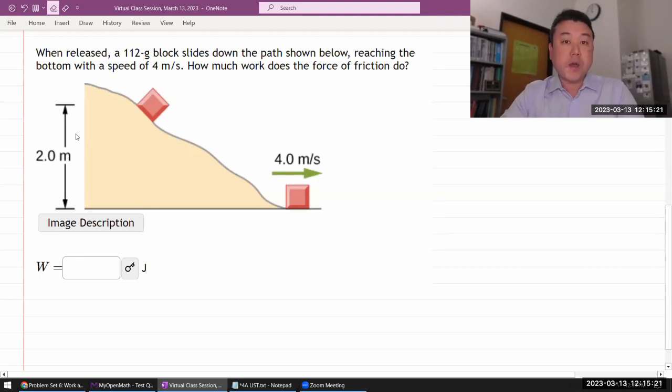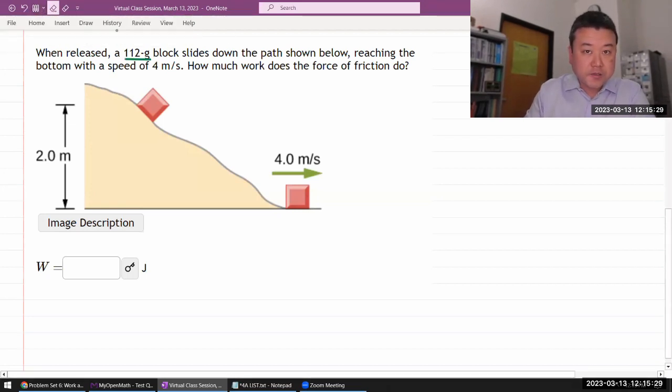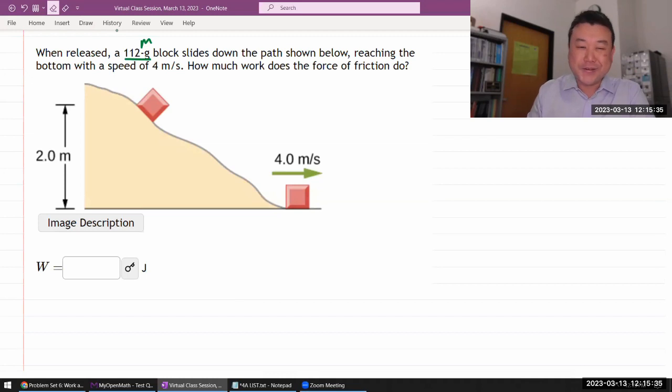Alright, this question says when released, some mass of a block. Let me just start labeling things so I keep track of what's been given. Block slides down the path. Oh, it's an ugly path, reaching the bottom with some speed. Okay.